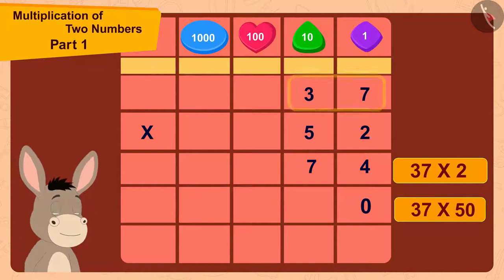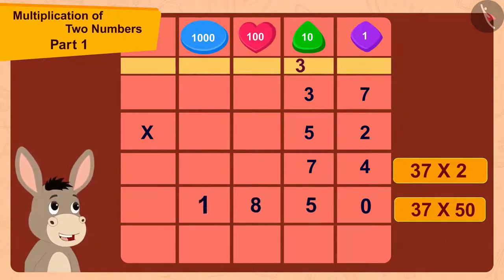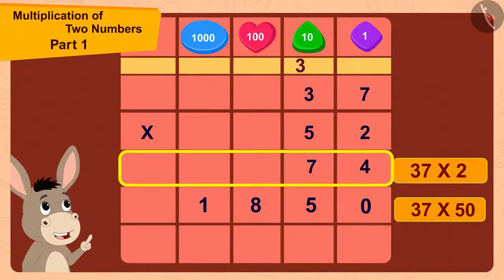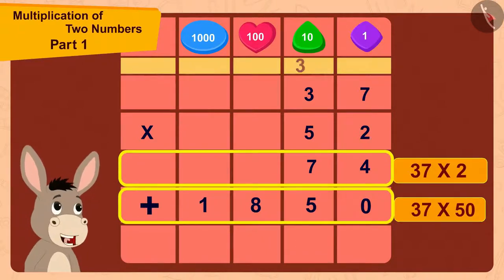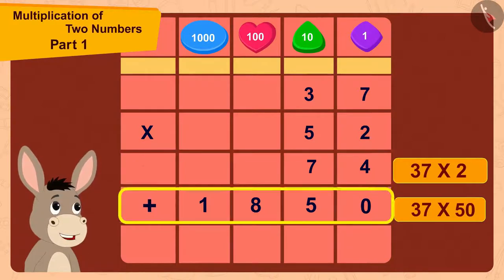37 times 5 is 185. Now, finally I will add 74 and 1850.